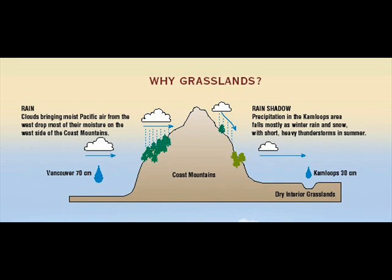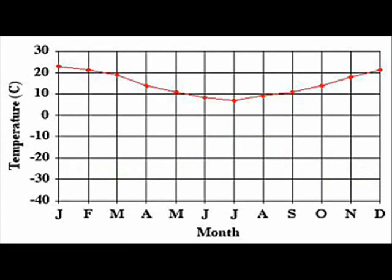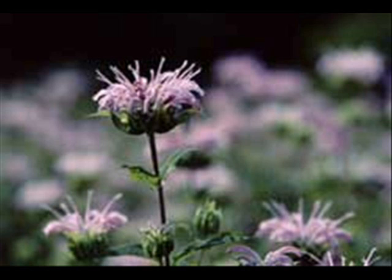The weather and the climate of the grasslands changes throughout the years. Precipitation in the grasslands usually occurs in the late spring and summer. The average yearly rainfall is about 25 to 75 centimeters, or 10 to 29 inches. Average temperatures in the summer are about 30 degrees Celsius and 86 degrees Fahrenheit. During the winter, it is 0 degrees Celsius with 32 degrees Fahrenheit.